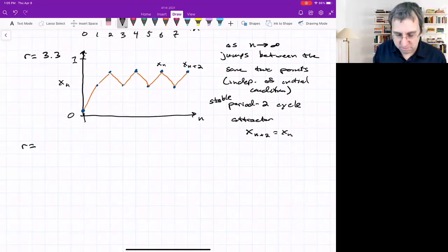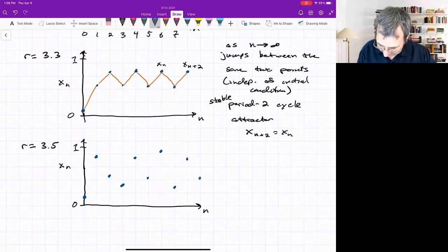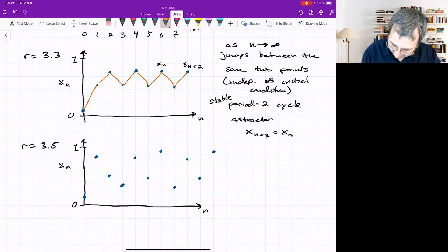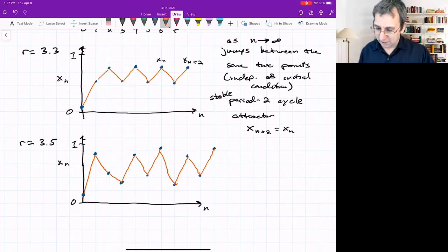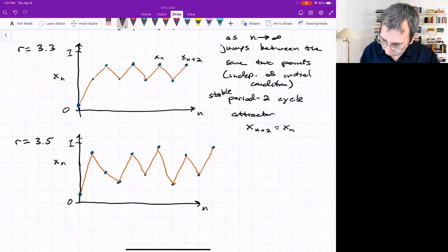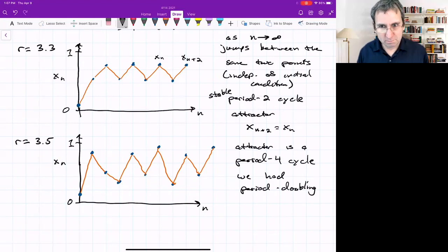What if we turn this knob a little higher? r equals 3.5. We get something that settles on a cycle, but it goes down, then up, then down, then higher, and then it repeats. It's repeating, but not every two iterates. It's repeating every four iterates. We call this a period-4 cycle. That's interesting. What happened to three? We had period doubling, which will be one of the main phenomena.